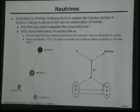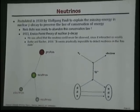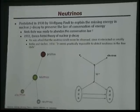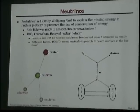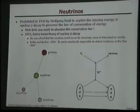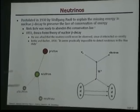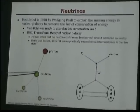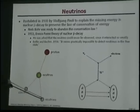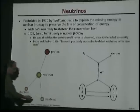So what are neutrinos? In 1930 they were postulated by Pauli to explain the missing energy in nuclear beta decay, simply to preserve the law of conservation of energy. What is nuclear beta decay? You have a neutron that decays into a proton, an electron, and a neutrino. At that time they didn't detect this particle, so there was an imbalance.